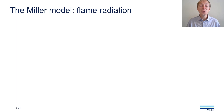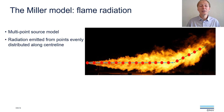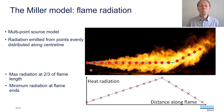The Miller model is what we call a multi-point source model for predicting radiation. Looking at the figure, you can see a set of evenly distributed points along the centerline of the flame, each emitting radiation. Each point does not emit the same amount of radiation; rather, we assume there is a peak radiation happening at around two-thirds of the length of the flame. The minimum radiation occurs at the two ends of the flame, and in between there is a linearly increasing and decreasing distribution for the radiation at each of these points.